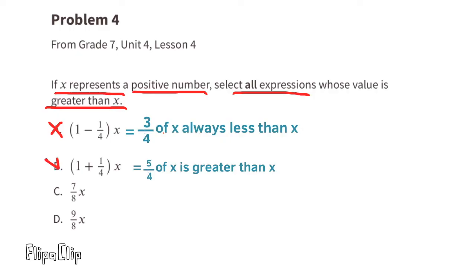Let's look at C: 7/8 of x. 7/8 is less than 1, and less than 1 times x is going to be less than x, so I would not select C. Let's look at D: 9/8 times x. 9/8 is greater than 1, and any number greater than 1 times x is going to be greater than x. Remember, this is when x represents a positive number. I would select B and D.